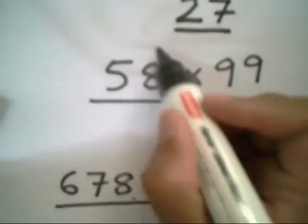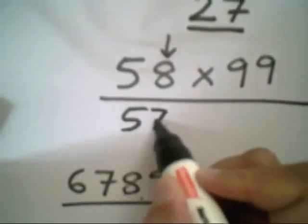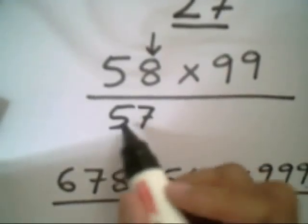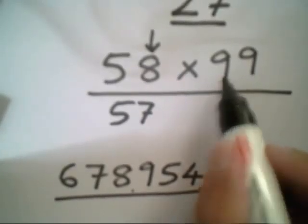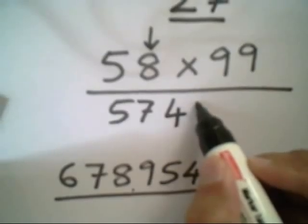Same way, when it is 58 into 99, what I do is I just make one less in 58, that is 57. And this 57 I subtract from 99. Rather, this 5 and 7 I subtract from 9. That is 9 minus 5 is 4, and 9 minus 7 is 2. That's all. I got the answer.